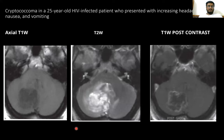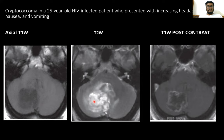Here is another case of a 25-year-old HIV patient presenting with increasing headache, nausea, and vomiting. On T1-weighted axial image, the right cerebellar hemisphere shows a hypo-intense lesion. On T2-weighted image, there is a hyper-intense lesion surrounded by perilesional edema. On T1 post-contrast, peripheral ring enhancement is seen.